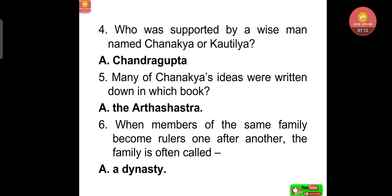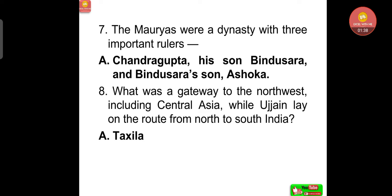Who was supported by a wise man named Chanakya or Kautilya? Chandragupta was supported by this man. Many of Chanakya's ideas were written down in which book? That was the Arthashastra. When members of the same family become rulers one after another, the family is often called a dynasty. The Mauryas were a dynasty with three important rulers: Chandragupta, his son Bindusara, and Bindusara's son Ashoka.